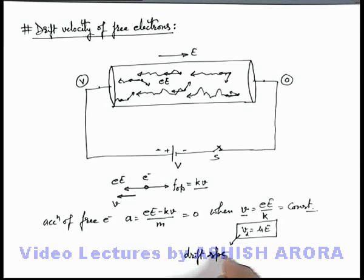Now this is the speed we write as vd or this is called drift speed of electrons in current carrying conductor.